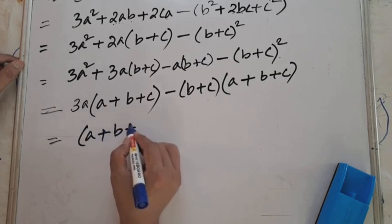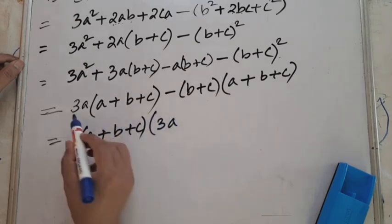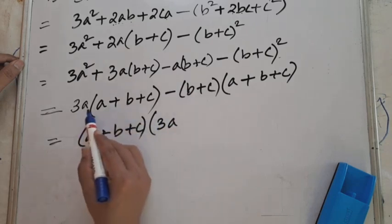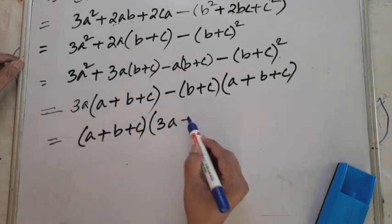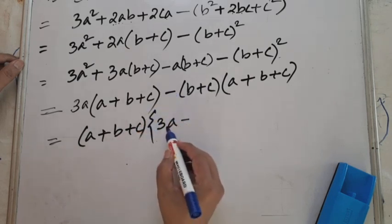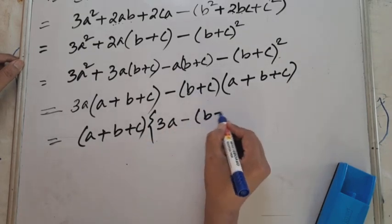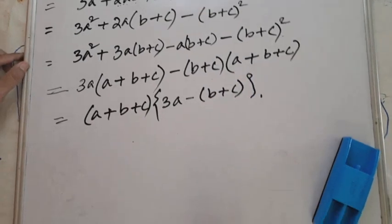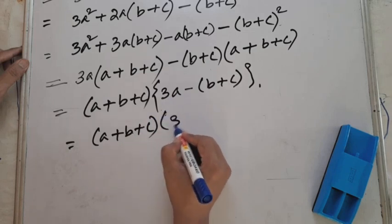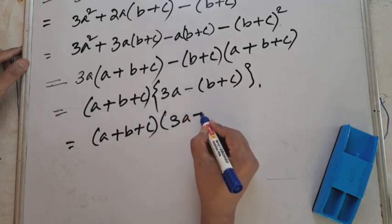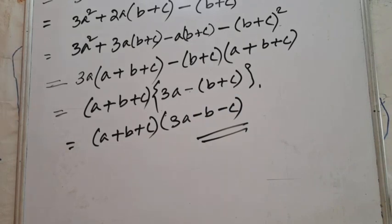Taking (a + b + c) as common, 3a remains in the bracket from the first term, and (b + c) remains from the second term with a minus sign. So the final answer for question 13 is (a + b + c)(3a - b - c).